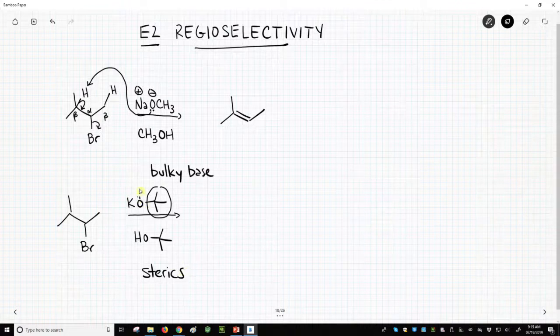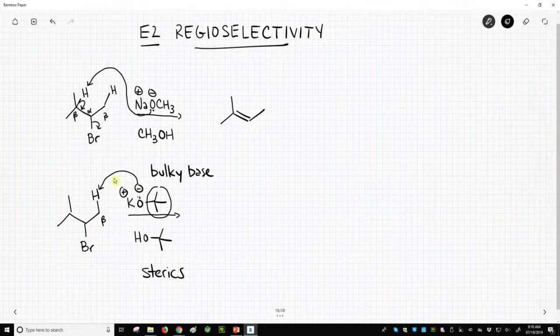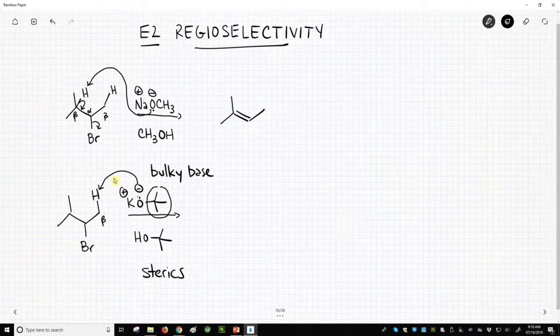Then, our base is too bulky to reach this highly hindered beta hydrogen, and so it goes after the beta hydrogen on the less highly substituted beta carbon.